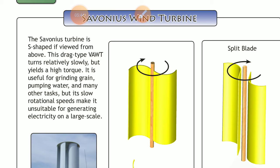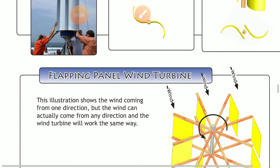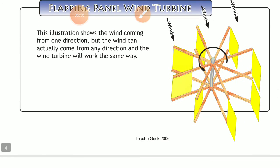We can use the Savonius turbine for commercial and general purposes such as pumping water and grinding grains, but we do not use it to generate electricity. Next is the flapping panel wind turbine. As shown in this diagram, wind comes from one direction, but wind can actually come from any direction. The wind turbine captures wind movement and provides different blade movements.